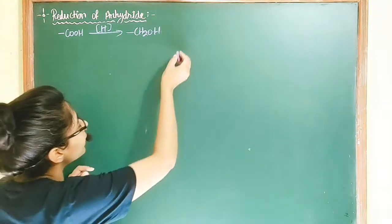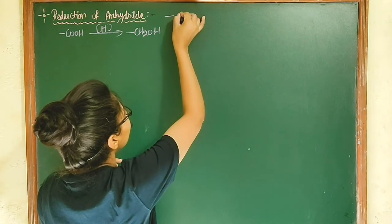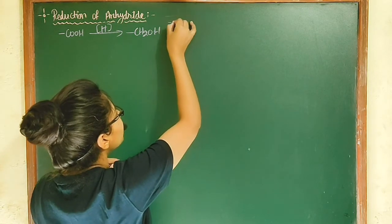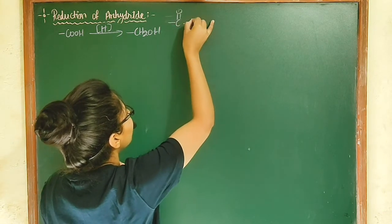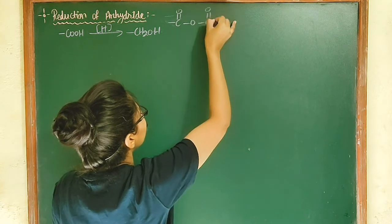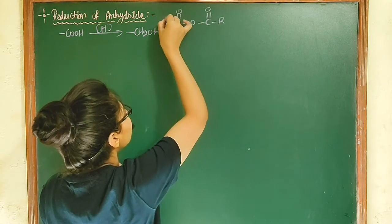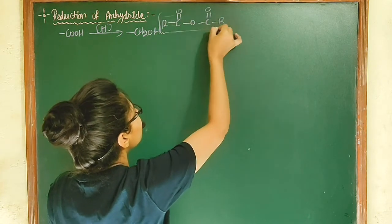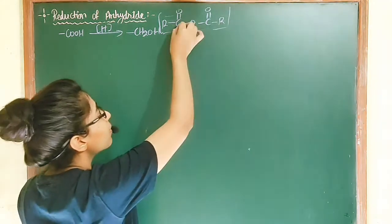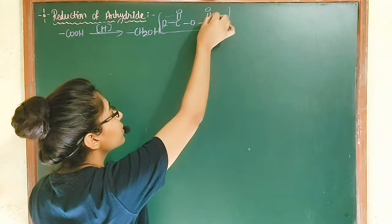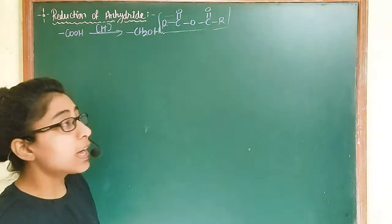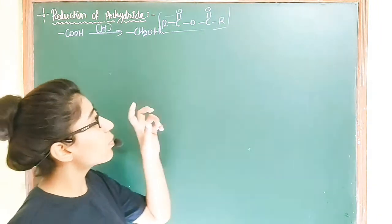If we talk about the anhydride group, in any compound you can find this functional group: C double bond O, O, C double bond O. You can consider this group as the anhydride functional group — it is R-C(=O)-O-C(=O)-R.